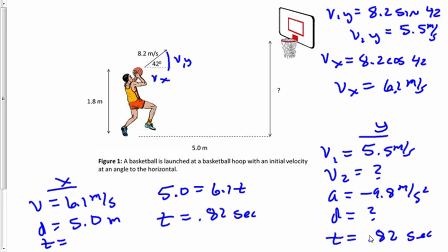We'll use the equation d equals v1t plus one half at squared. Displacement equals 5.5 times 0.82 plus one half times negative 9.8 times 0.82 squared. We find displacement equals 1.2 meters.